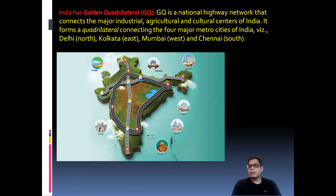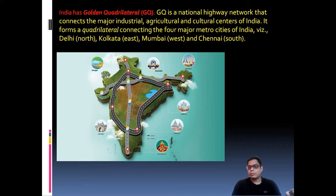The Golden Quadrilateral is a national highway network that connects major industrial, agricultural, and cultural centers of India. It forms a quadrilateral connecting four major metro cities: Delhi in the north, Kolkata in the east, Mumbai in the west, and Chennai in the south. This entire connection of these four cities is widely known as the Golden Quadrilateral.